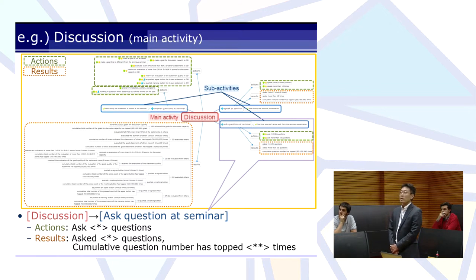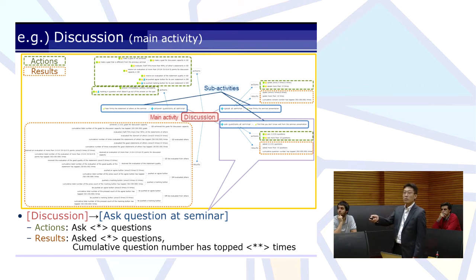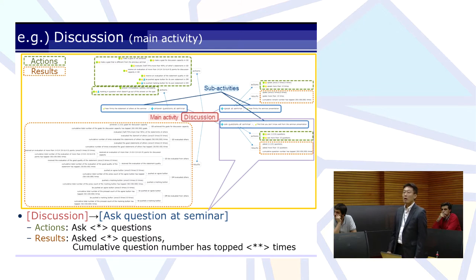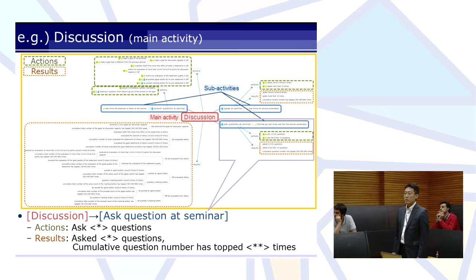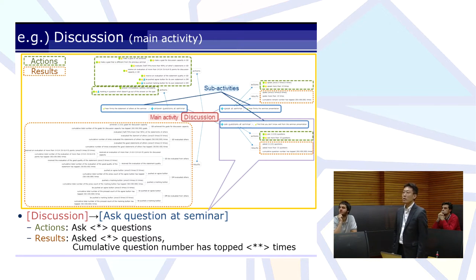This is an example of discussion, which is one of the main activities. The discussion activity has several sub-activities. Sub-activity 'asks questions at seminars' includes some actions and results. When users take actions such as ask one, two, or three questions and move into them, they can gain results such as 'asked three questions' or 'accumulated question number talked 100 times'.